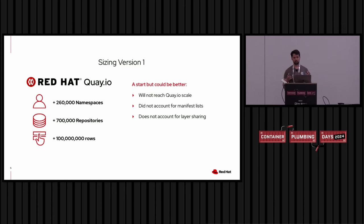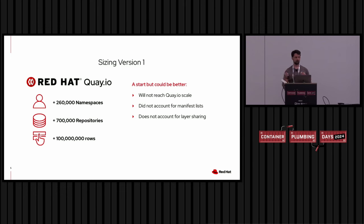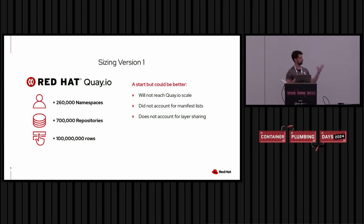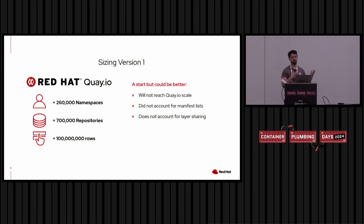This initial version of sizing was a good start — it gave enterprise users a way to control storage costs. But there are a couple of things we could do better. One is that we're continuously recalculating the size of namespaces and repositories from scratch each time. At Quay.io, we have over 260,000 namespaces, over 700,000 repositories, and some tables that the quota feature interacted with contain over 100 million rows. So the summing operation becomes very, very expensive, and because of this we ultimately cannot deploy this feature to Quay.io.